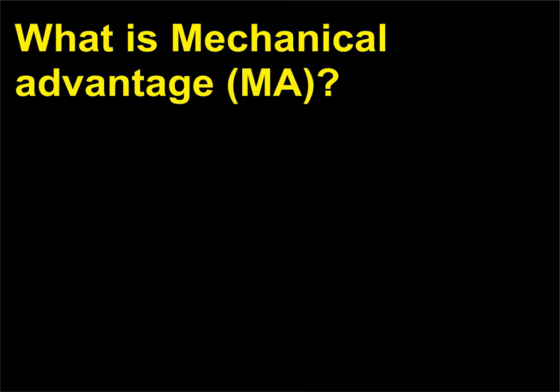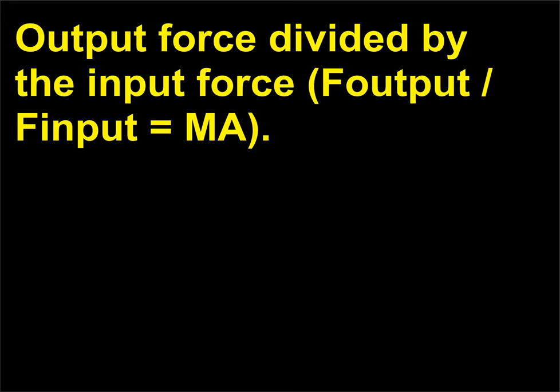What is mechanical advantage? MA. Output force divided by the input force. F output / F input = MA.